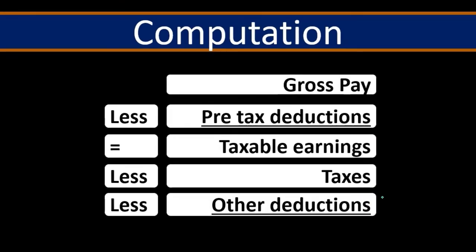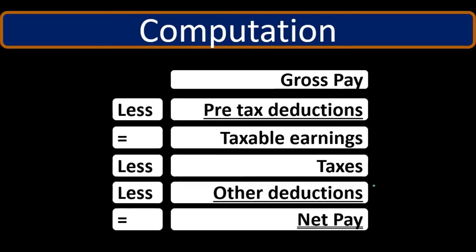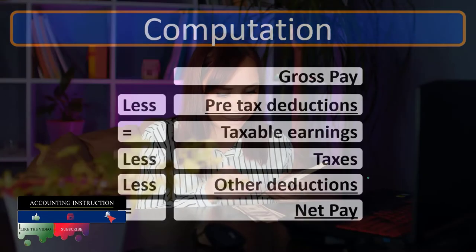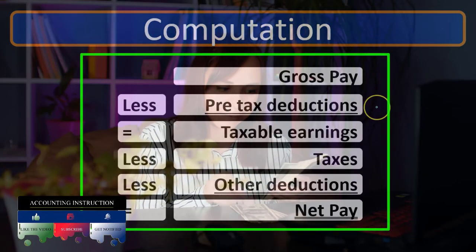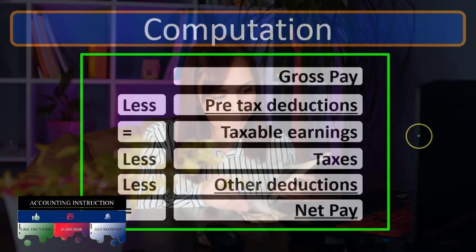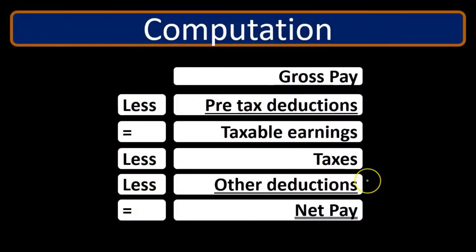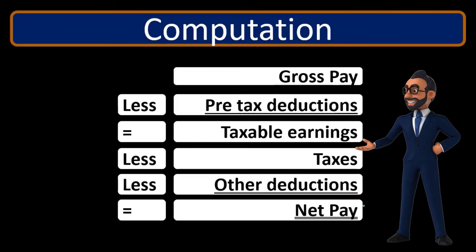When we look at the register and actually do these calculations, this ordering will become more apparent. We'll set up the register logically: take the gross pay, subtract pre-tax deductions, get taxable earnings, calculate taxes on those earnings, deduct the taxes, and then take everything else out before arriving finally at the net pay — the actual amount that will be paid.